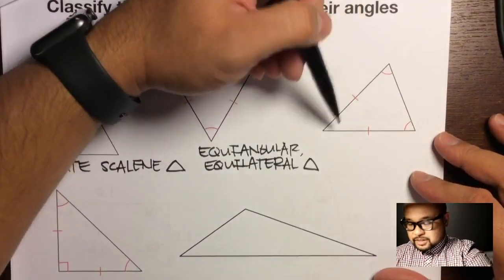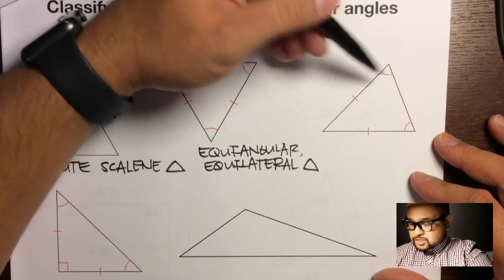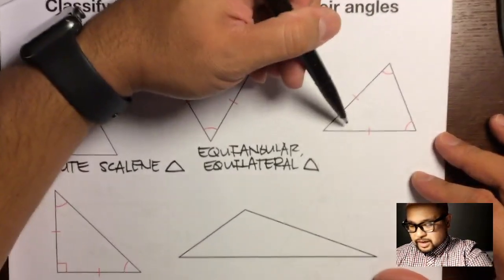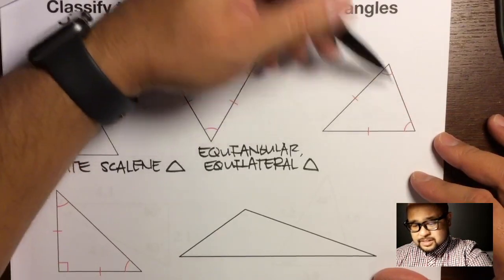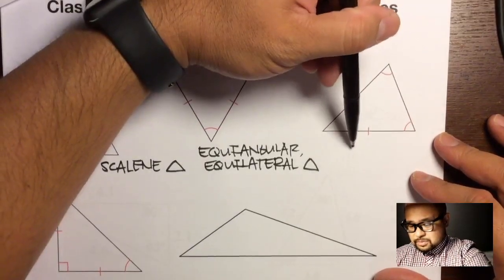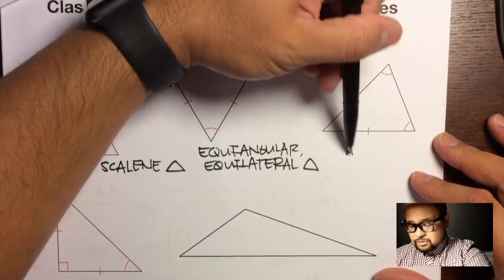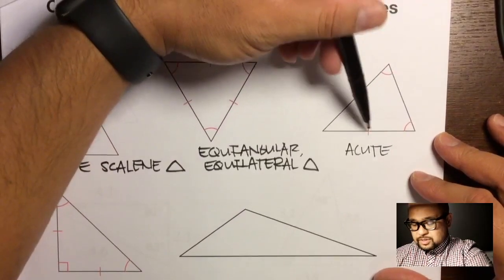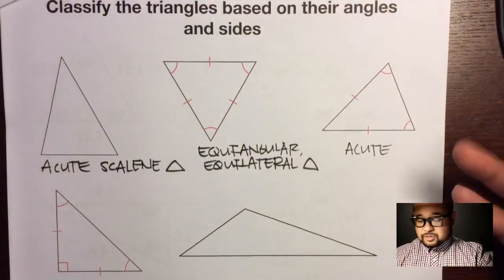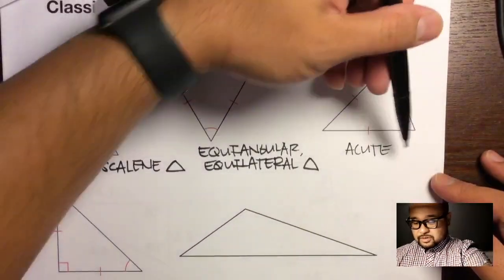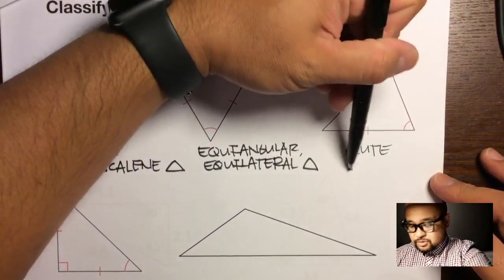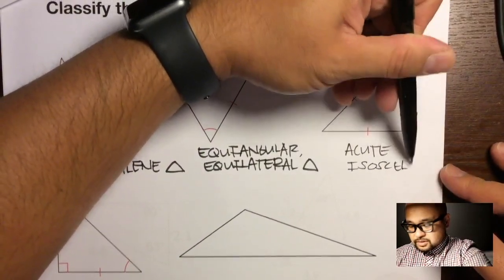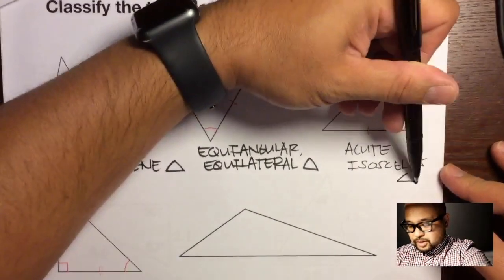Looking at the next one: all the angles appear to be less than 90 degrees, so this is acute. There are one tick mark and one tick mark on two sides, meaning two sides are congruent. So this is an acute isosceles triangle.